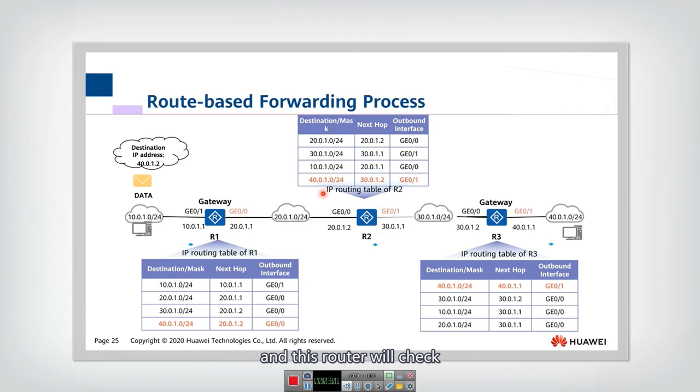This router will check that this entry matched, so it will go from interface one to this interface, and then finally to gateway three. Gateway three has its own routing table and also does the longest match. It matches with this entry and finally goes through this one.